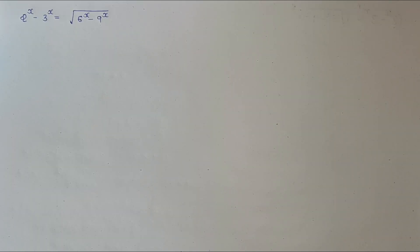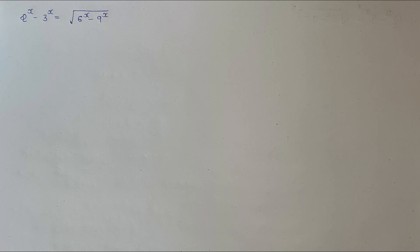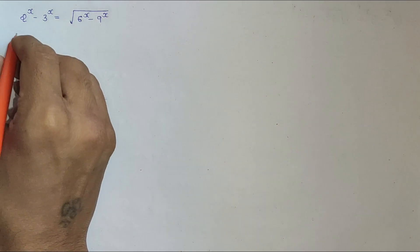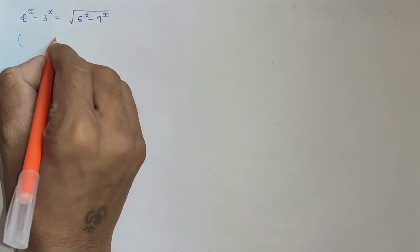Hello mathematician. Start with a beautiful numerical problem. The question is 2 to the x minus 3 to the x equals the square root of 6 to the x minus 9 to the x, and we have to solve for x. Let me first of all square both sides.